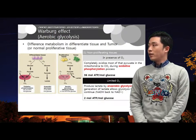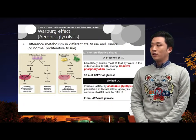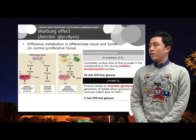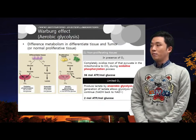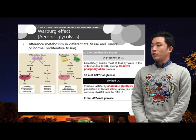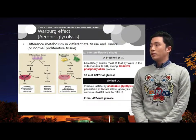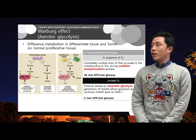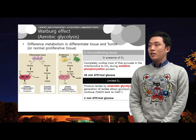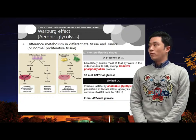In the presence of oxygen, non-proliferating tissues first metabolize glucose to pyruvate via glycolysis and then completely oxidize most of the pyruvate in the mitochondria to CO2 during the process of oxidative phosphorylation. In this process, 36 mol ATP are produced for one mole of glucose.